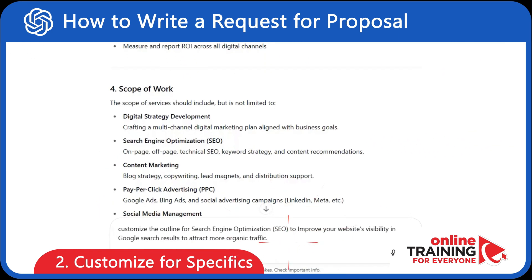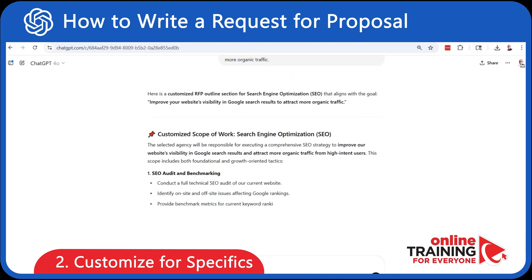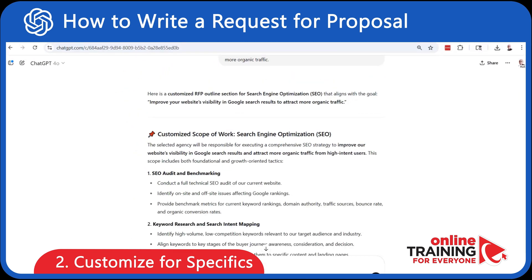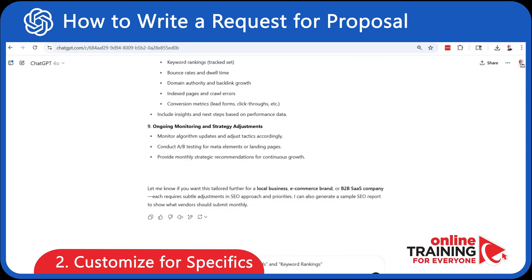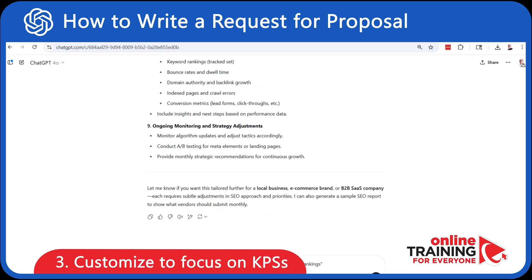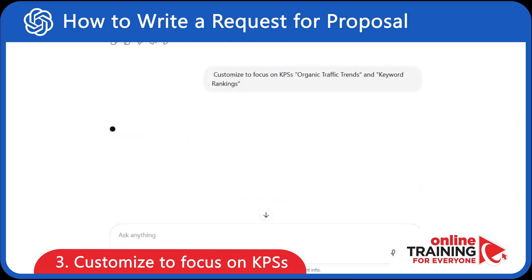Customize the outline for search engine optimization to improve your website's visibility in Google search results to attract more organic traffic. Now, remember that the customer mentioned that they would like to improve organic traffic trends as well as keyword rankings. Let's ask ChatGPT to help and customize to focus on KPIs like organic traffic trends and keyword rankings.